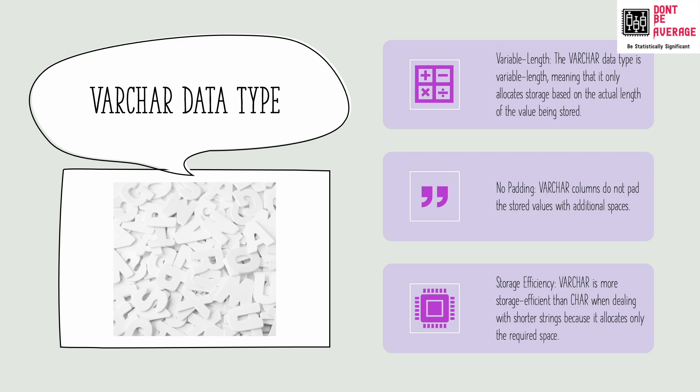Now varchar is different. It is like a stretchy box. It only uses the space it needs. We can call it a variable length data type. So if you put in a five letter word, it uses just five spaces, not 10. So it is variable length meaning that it only allocates storage based on the actual length of the value being stored. And there is no padding since we don't need to maintain a fixed length.